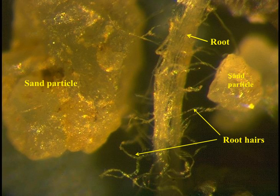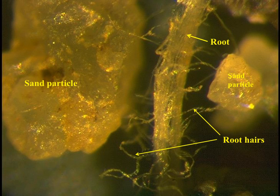In this picture a root is growing down through a sand root zone mix. Notice the numerous root hairs coming off the root — these are single cell appendages where the majority of water and nutrients are taken up. In compacted soils, the number of these root hairs is significantly reduced.